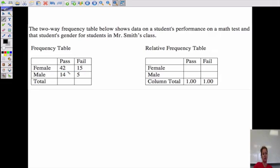But the reason we do relative frequency is because if you add up these totals, there's a lot more females than there are males. So we look at the percentage of people that passed and failed. Here the total number of passes would be 56, and the total number of fails would be 20.